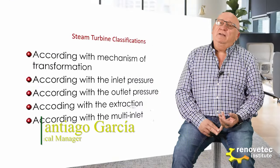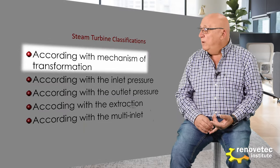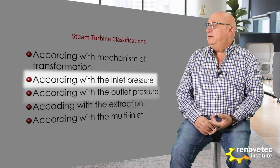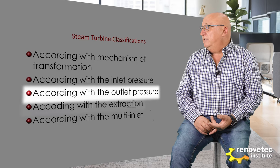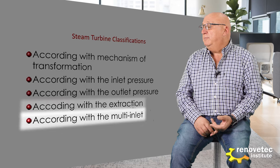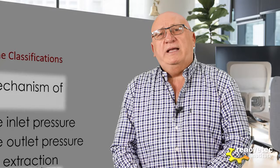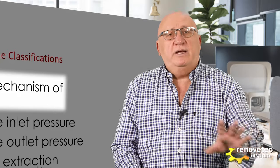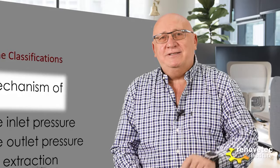The first criterion is according to the mechanism of transformation. The second is according to the inlet pressure. The third is according to the outlet pressure. The next is according to the extraction. And the last one is according to the possibility to have multi-inlet. According to the mechanism of transformation, we have action turbine and reaction turbine. We will see this difference later.